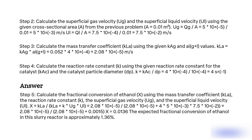Step 5: Calculate the fractional conversion of ethanol X using the mass transfer coefficient KL, the reaction rate constant KA, the superficial gas velocity UG, and the superficial liquid velocity UL. X = KL / (KL + KA × UG × UL) = 2.8 × 10⁻⁵ / (2.8 × 10⁻⁵ + 4 × 5 × 10⁻³ × 7.5 × 10⁻²) = 2.8 × 10⁻⁵ / (2.8 × 10⁻⁵ + 0.15) ≈ 0.136. The expected fractional conversion of ethanol in this slurry reactor is approximately 1.36%.